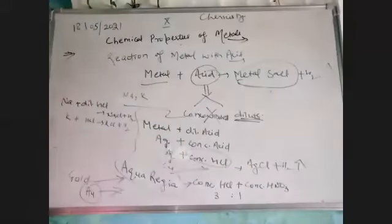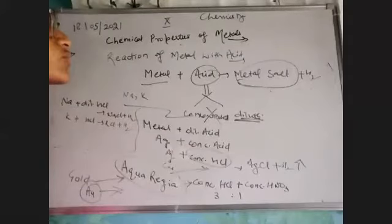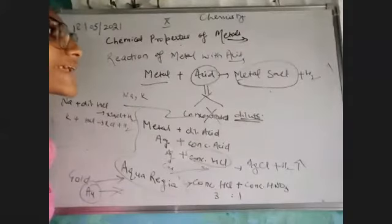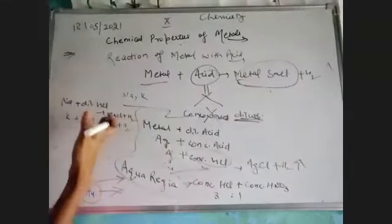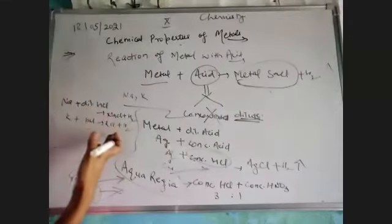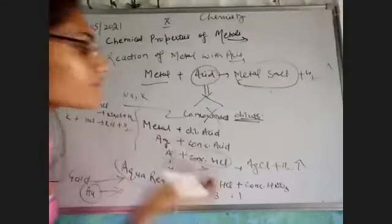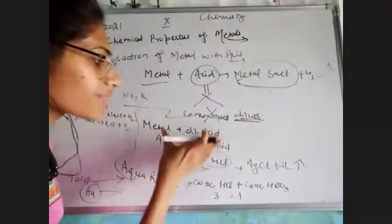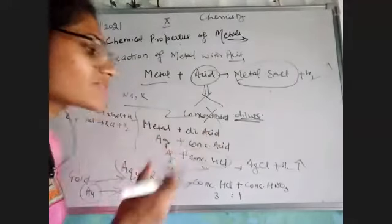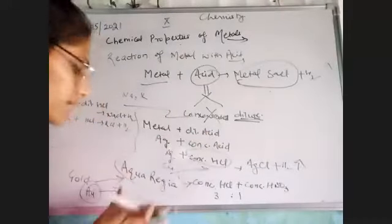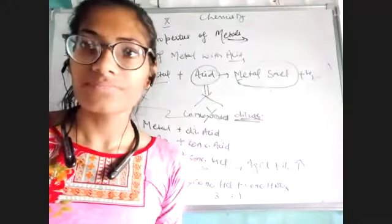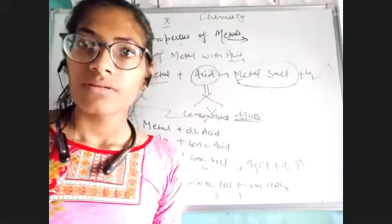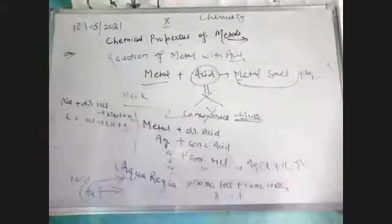So that was the topic of what happens when metal reacts with acid. We covered examples like sodium and potassium reacting with dilute acid, and then the cases of dilute versus concentrated acid. Finally, we studied aqua regia for dissolving gold.